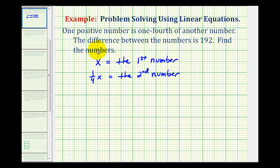We're told the difference between these numbers is 192. Well, difference means subtraction. So we'll have the equation x minus one-fourth x equals 192.